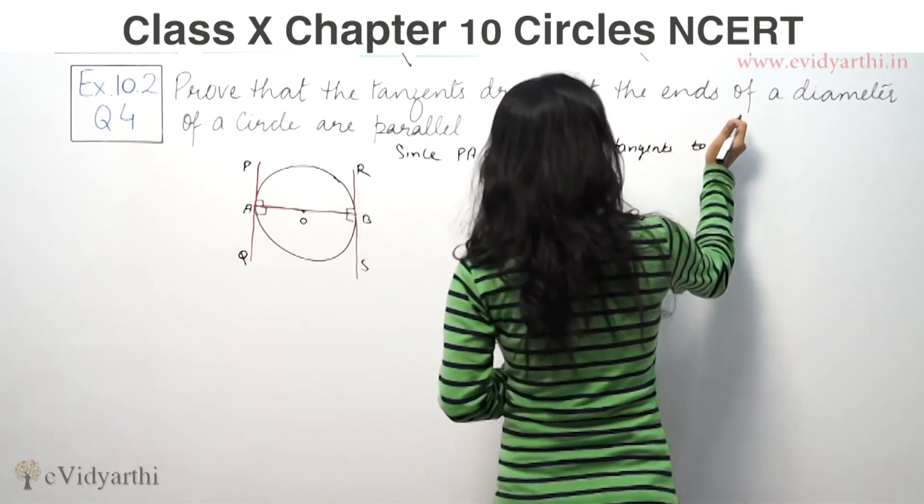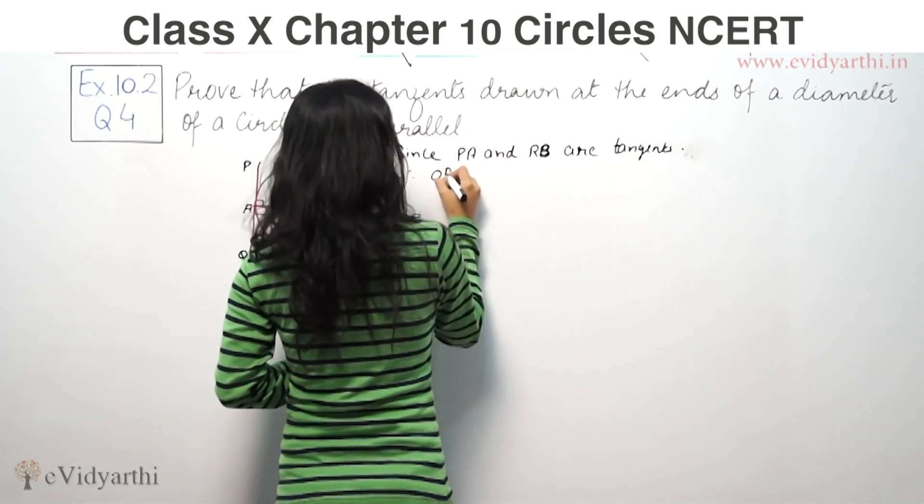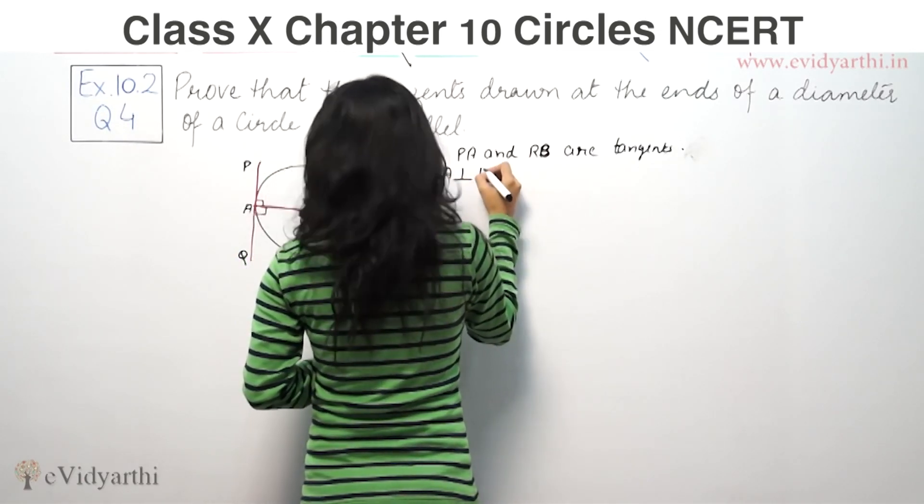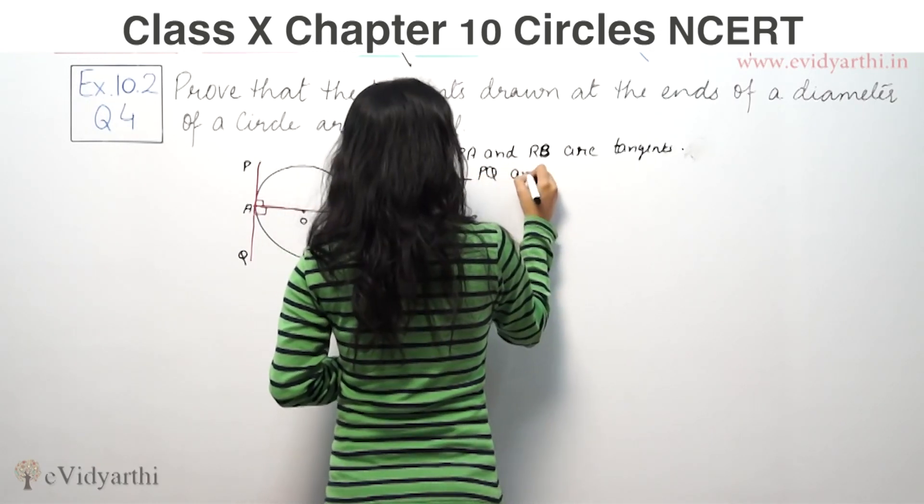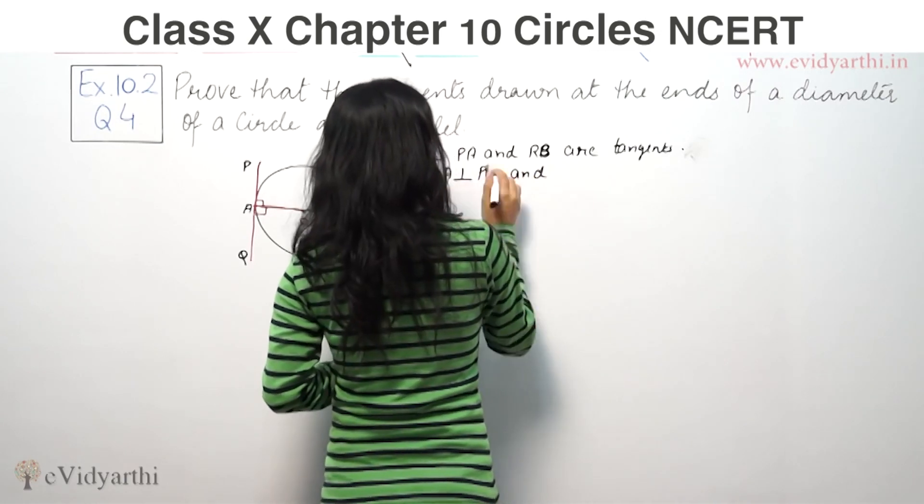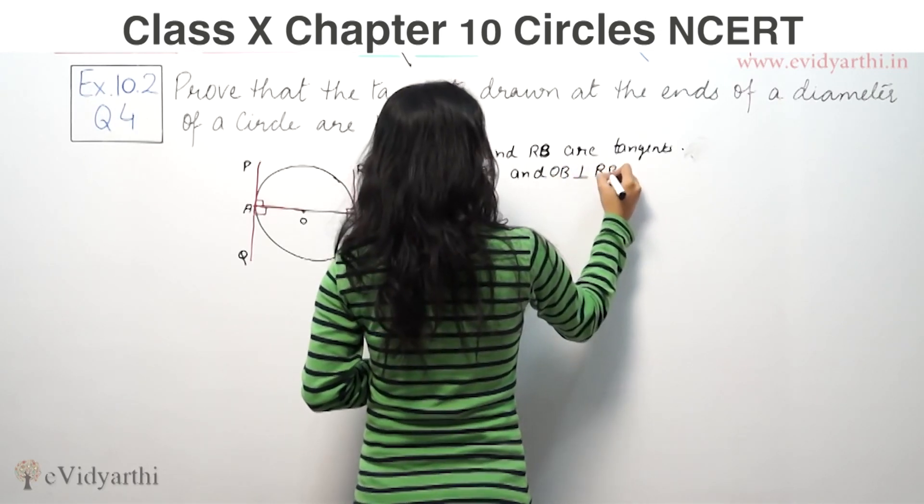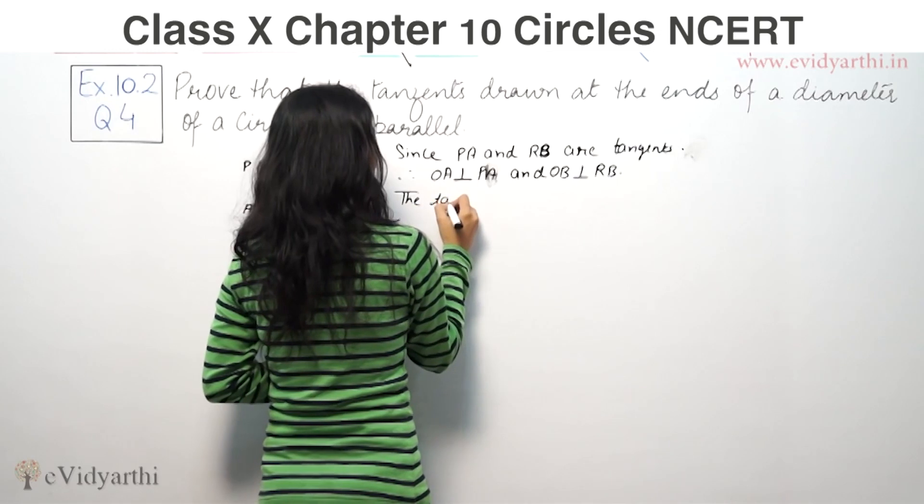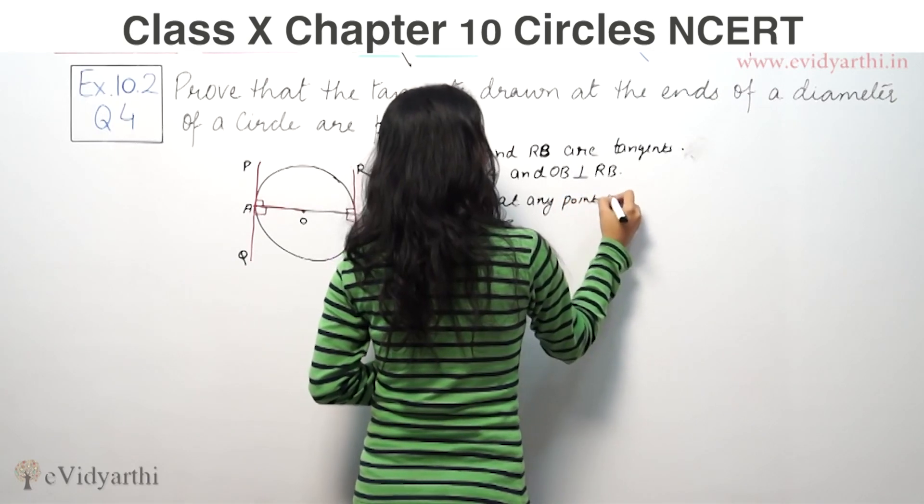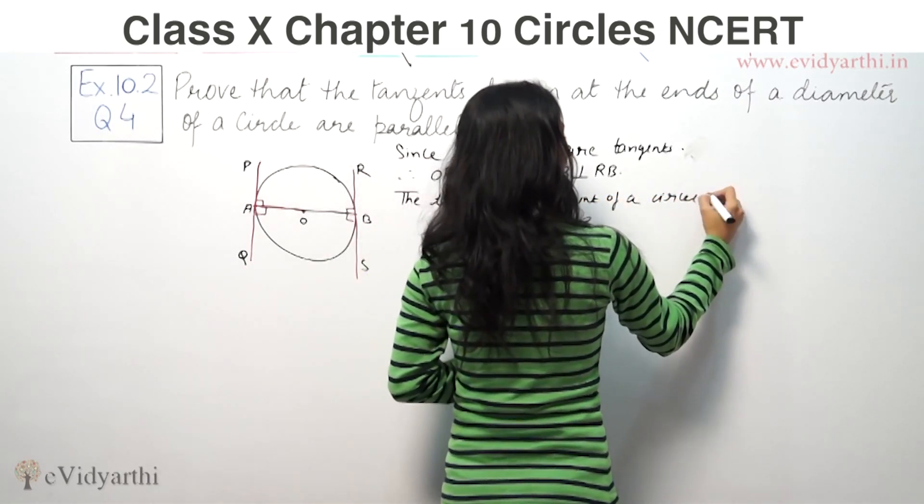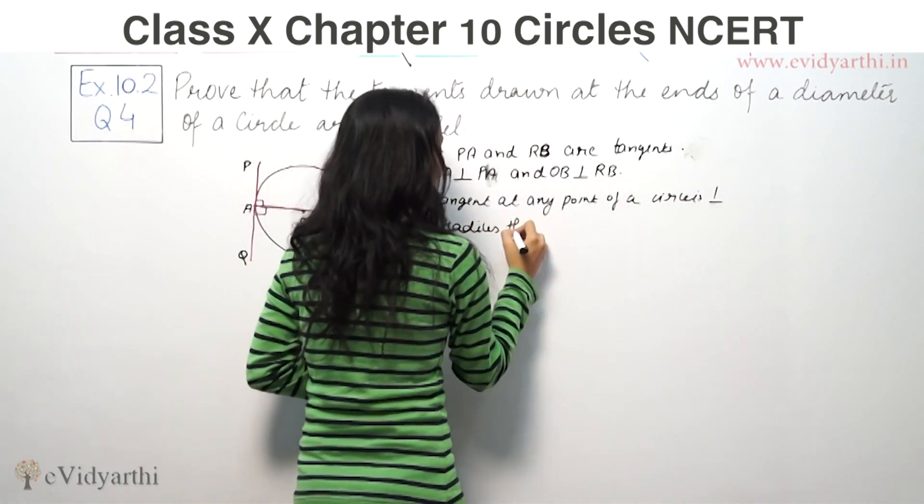Therefore OA is perpendicular to PQ and we can write OB is perpendicular to RS. The tangent at any point of the circle is perpendicular to the radius at the point of contact.